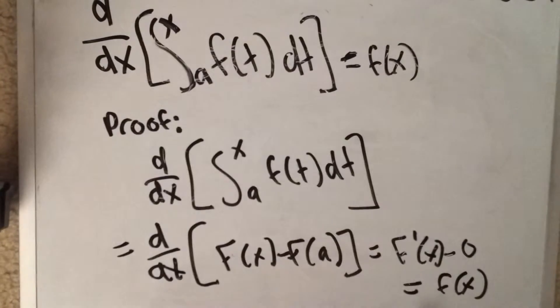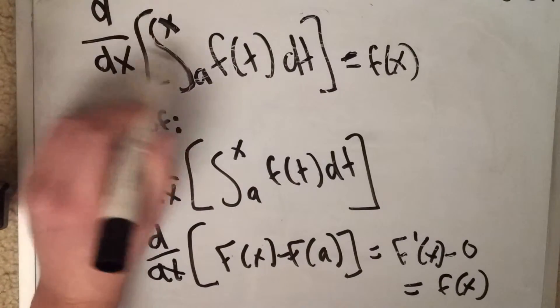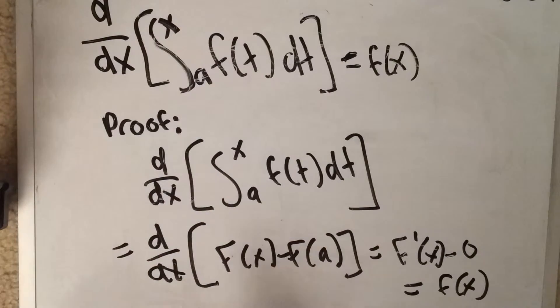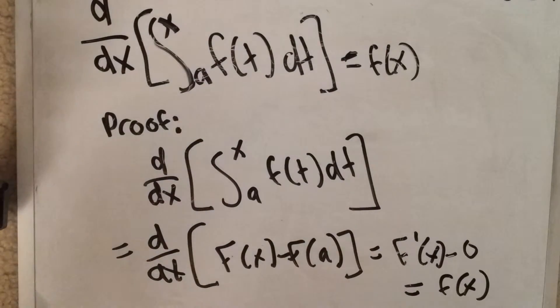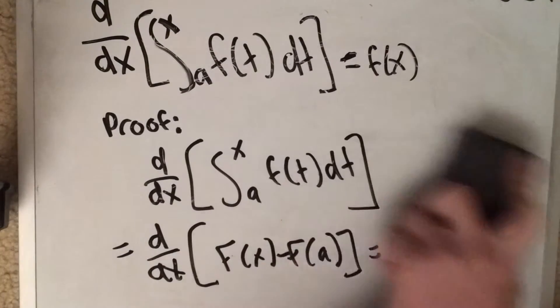because the integral and the derivative are inverses and they will cancel each other out. So basically there are three different types of problems which the FTC2 would be applicable.